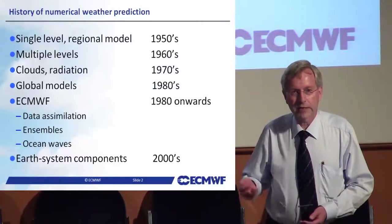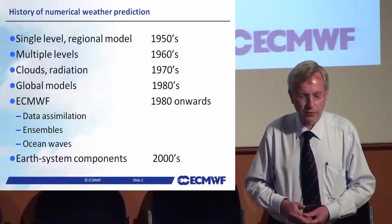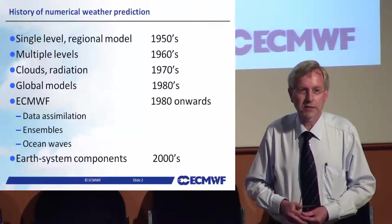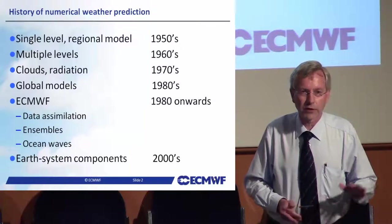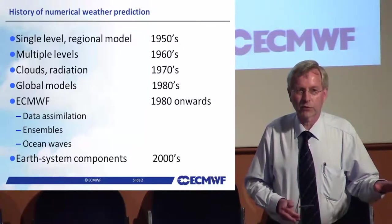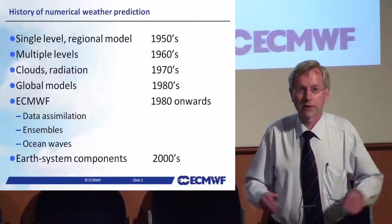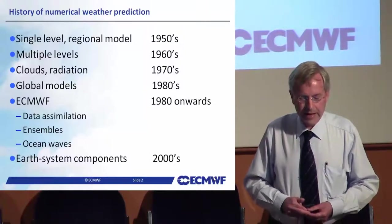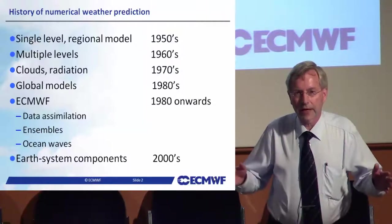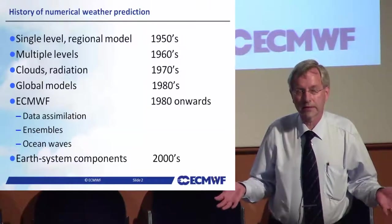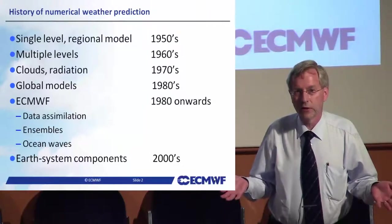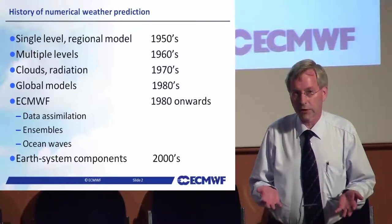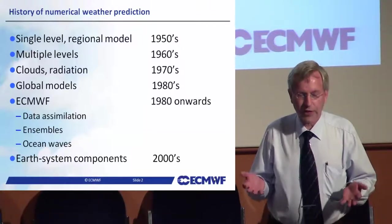As computer power increased and science progressed, models developed into multiple-level models in the 1960s. In the 1970s, clouds and radiation were included — first very primitively, with just a climatology of clouds. Gradually, clouds became interactive with the flow and radiation. In the 1980s, the regional domain was extended to the whole globe, because to make forecasts more than a couple of days ahead, you really needed to consider the whole global system. But models were still concentrating only on the atmosphere.